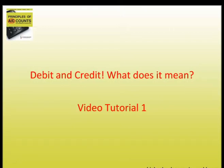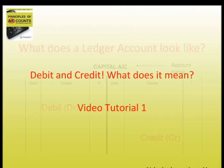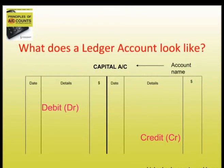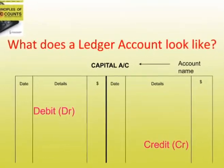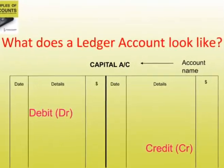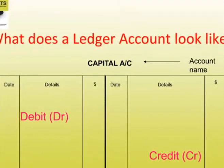You can refer to pages 29 to 47 in the text for more details, but for now we take a glimpse at what a ledger account looks like. This is what a ledger account looks like. At the top of the account is the account name, in this case the capital account.